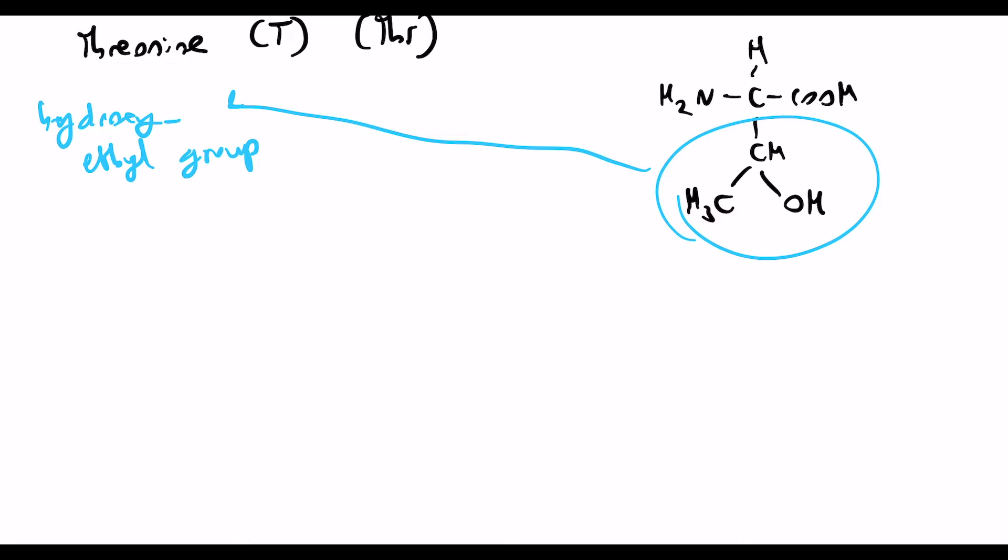Yep, and if you notice about the structure here, there's actually two chiral centers. So obviously all amino acids have a chiral center here on the alpha carbon. But on the side chain here, this carbon here is also chiral.